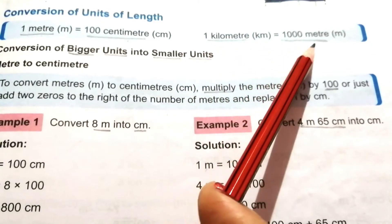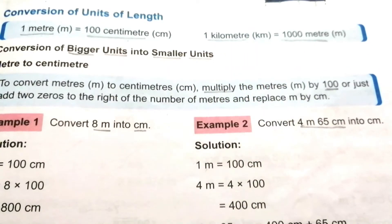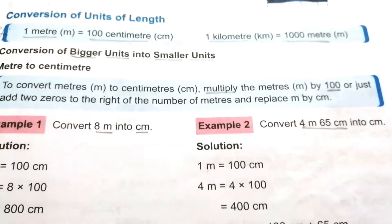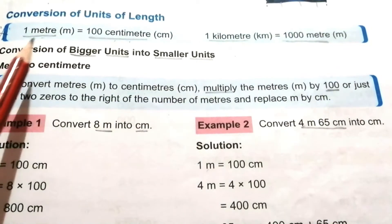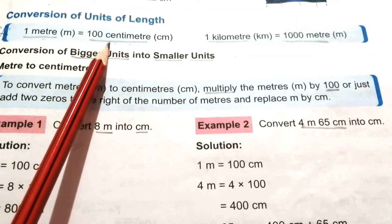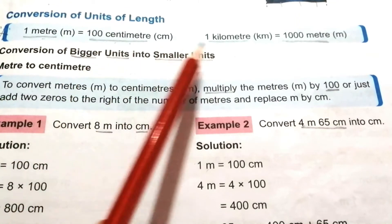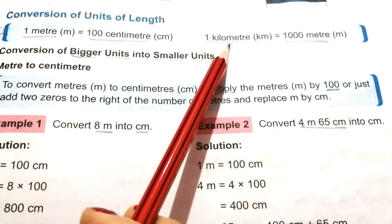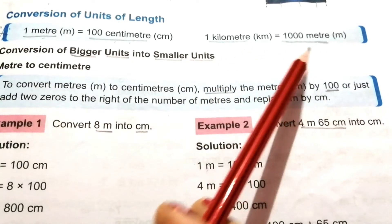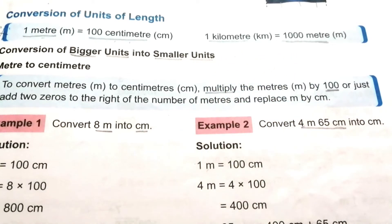To do this we should know the relationship between meter and centimeter, and kilometer and meter. One meter equals 100 centimeters. One kilometer equals 1000 meters. This is very important — you have to memorize this. Meter is a bigger unit than centimeter, and kilometer is a bigger unit than meter.